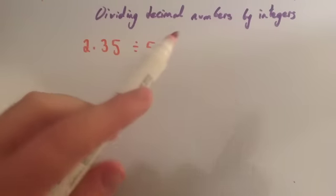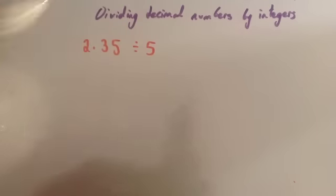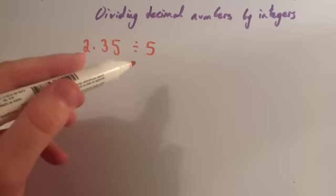In this video we're going to look at dividing decimal numbers by integers. An integer is just another word for a whole number. We're going to do 2.35 divided by 5.